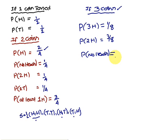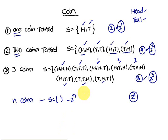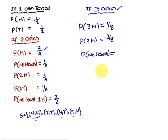Probability of getting no heads when three coins are tossed: no heads means all tails. Only one pair in the sample space has no heads, and there are eight total pairs, therefore probability of no heads is 1/8.